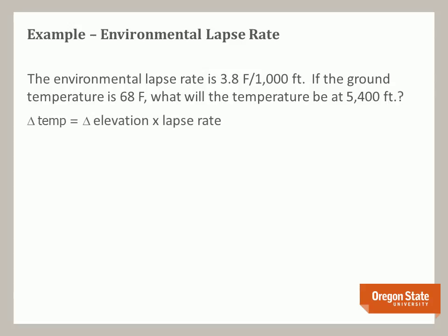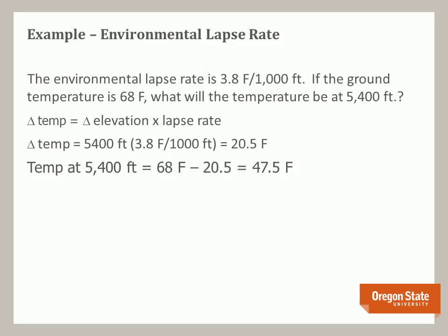Here's the equation to use: the change in temperature equals the change in elevation times the lapse rate. The change in elevation is 5,400 feet. The lapse rate is 3.8°F per thousand feet. When you multiply those numbers together, you get 20.5 degrees Fahrenheit. So the temperature at 5,400 feet equals 68 minus 20.5, which equals 47.5 degrees Fahrenheit.